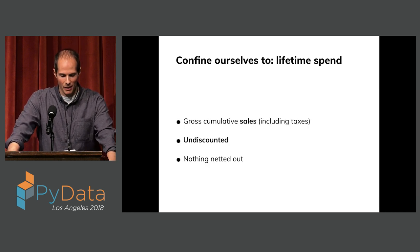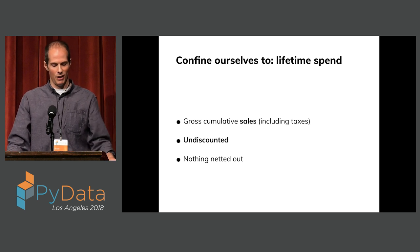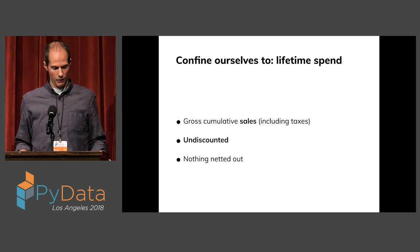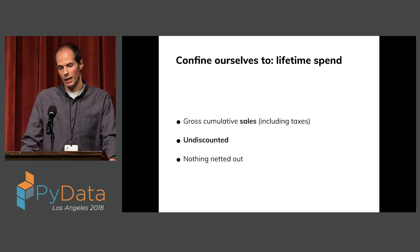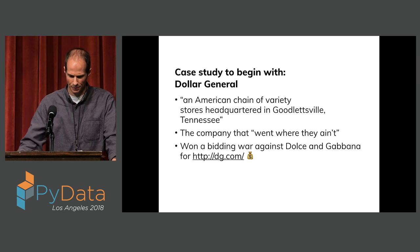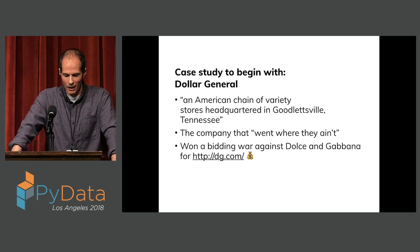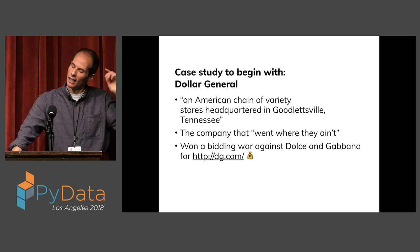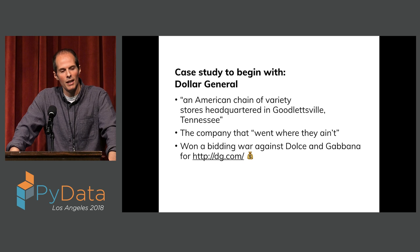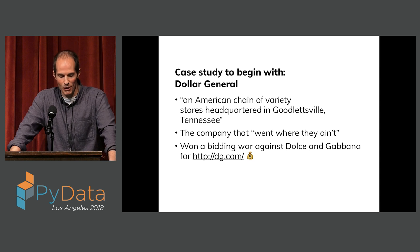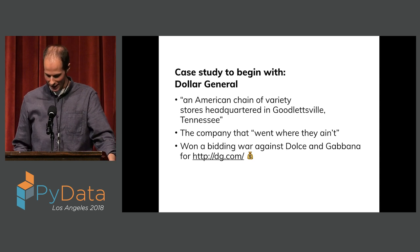So I'm going to try that thing where I define my metrics. We're going to be looking at lifetime spend, which is gross cumulative sales. We're not going to be using a discount rate in any of what follows, and we're also not going to net out any costs. I wanted to look at this for a company, so I picked Dollar General. Dollar General is a variety store with a strategy of building stores in rural America where places like Walmart wouldn't go. Fun fact: they also owned DG.com after winning it in a bidding war against Dolce & Gabbana.